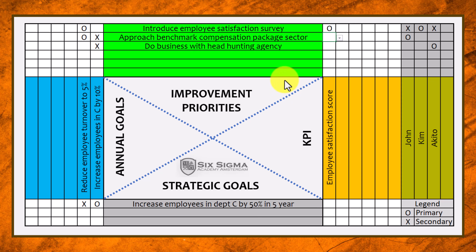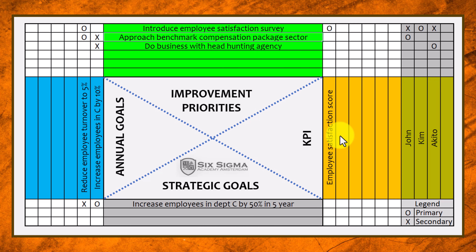For example, when it comes to approaching the benchmark compensation package for the sector, I might have as a KPI the deviation between our package and the standard package in the sector. If the standard is $3,000 and we currently give $1,000, then the deviation is $2,000. The size of that deviation would be a decent KPI to show whether we are on our way to achieve that improvement priority. You also need to come up with a KPI for the headhunting agency effort.